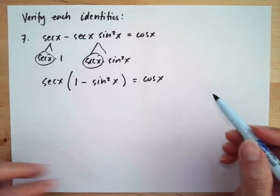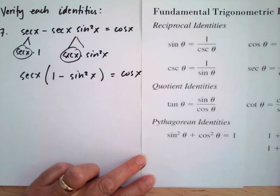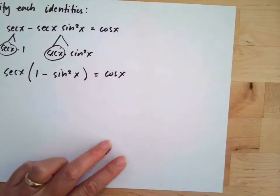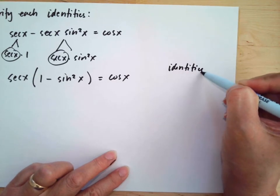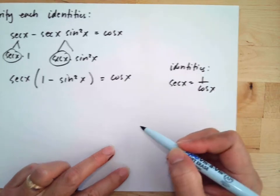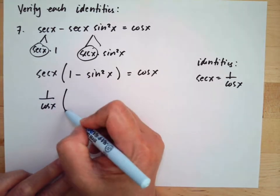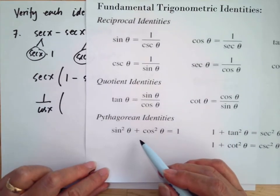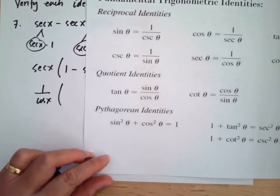We will use the reciprocal identity: sec(x) is equal to one over cosine x. So we replace sec(x) with one over cosine x, giving us one over cosine x, multiplied by the expression one minus sine squared x, equal to cosine x.